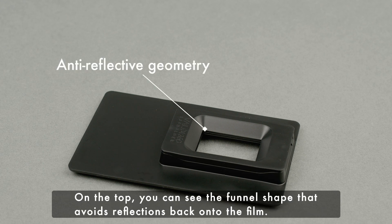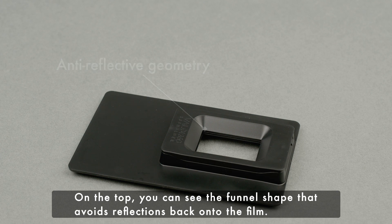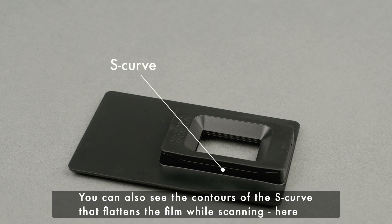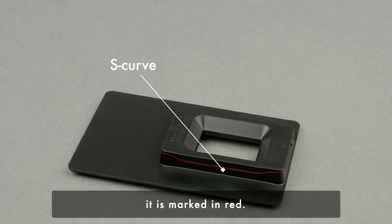On the top, you can see the funnel shape that avoids reflections back onto the film. You can also see the contours of the S-curve that flattens the film while scanning. Here it is marked in red.